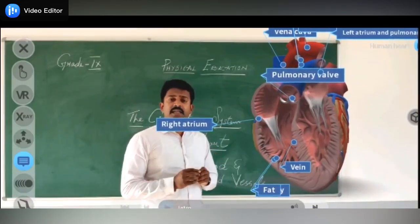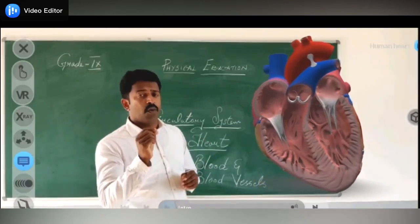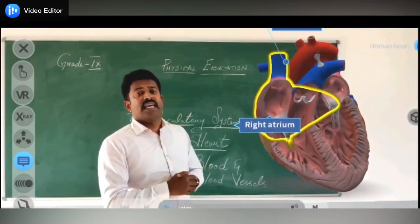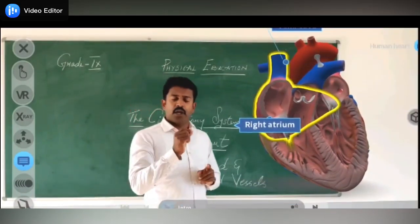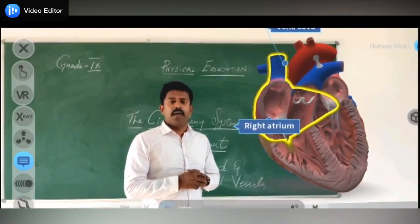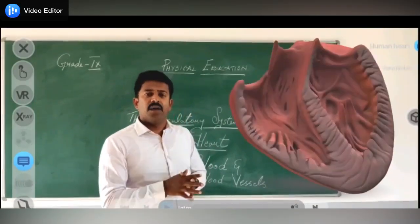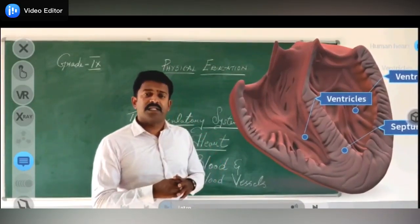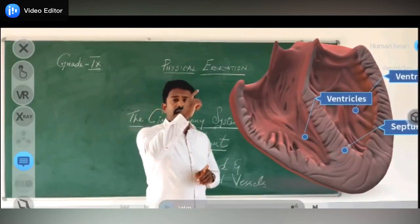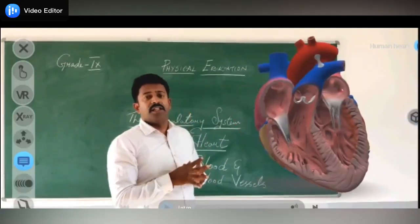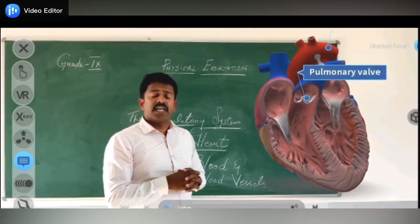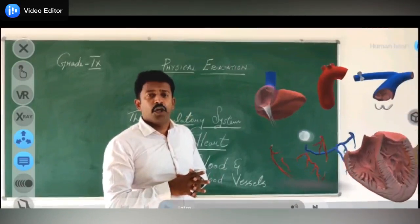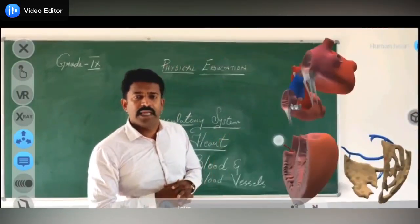We have two venae cavae — these are large vessels. We have the superior vena cava and the inferior vena cava. Inside the heart we have the pulmonary artery and pulmonary vein. At the top we have the aorta, which circulates the purified oxygenated blood to all parts of the body.